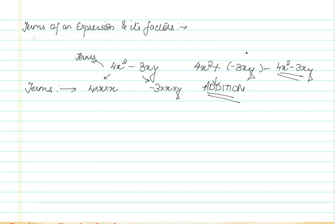Please note that there is always an addition operation when we combine terms to form an expression. Now, there is one more thing — what are factors? Factors are the variables and constants that combine to form a term. For example, in the term 4x squared, the factors are 4, x, and x; they combine together to form the term 4x squared.